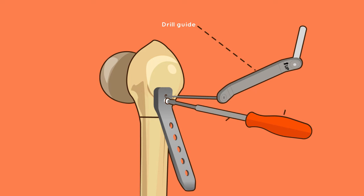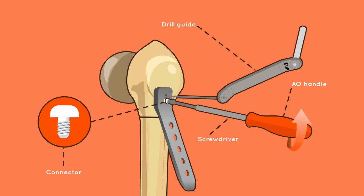Attach the AO handle to the screwdriver and lock the blade plate assembly by threading the connector clockwise through the plate into the blade as tightly as possible.